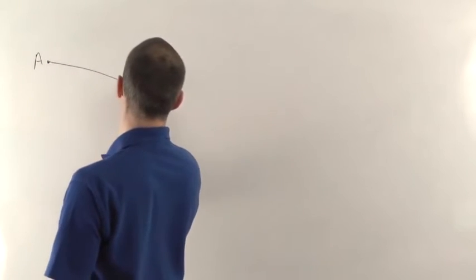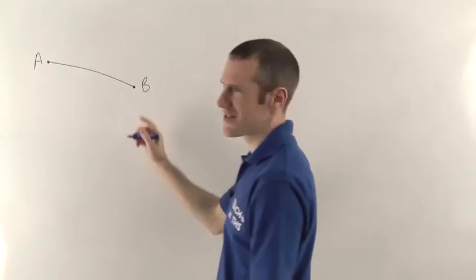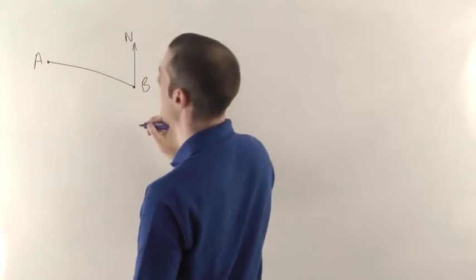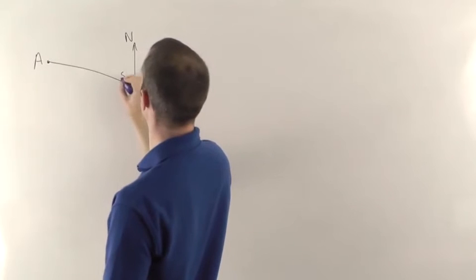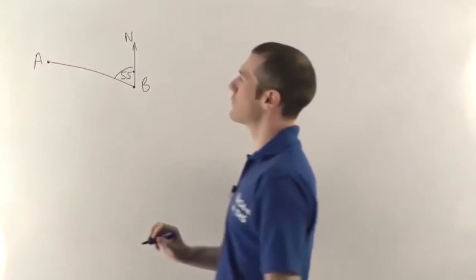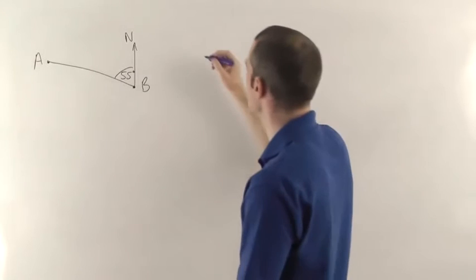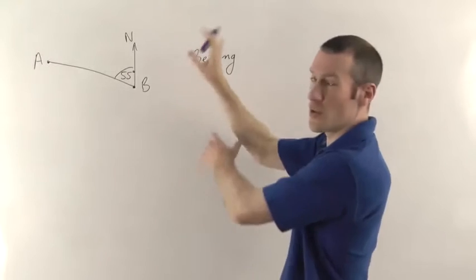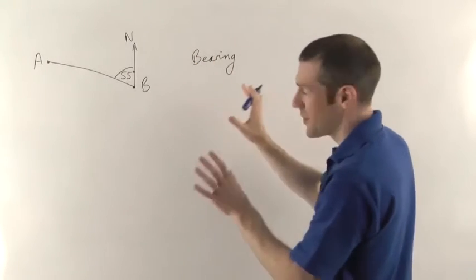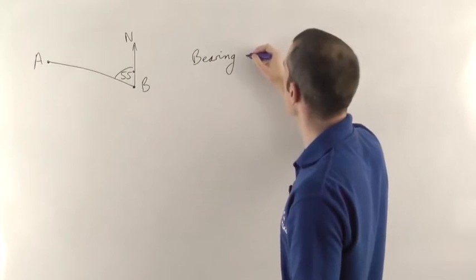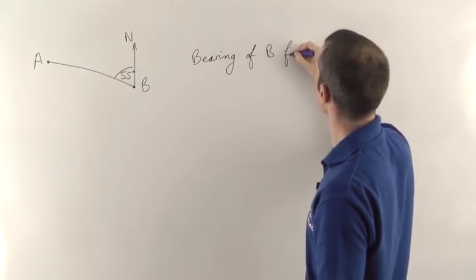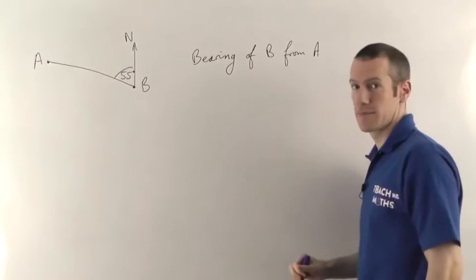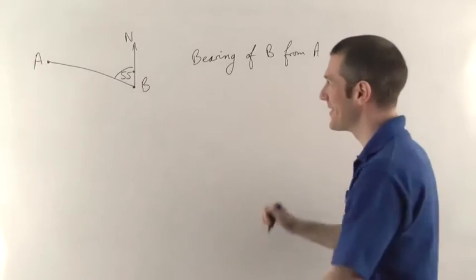In this question, they join up the two points with a straight line, put a north line on for you here, and tell you that this angle is 55 degrees. What it boils down to is: we want the bearing of B from A. Pause if you want to have a go at that.